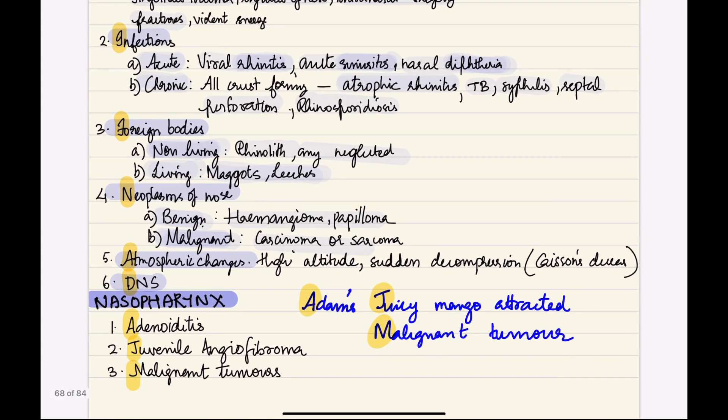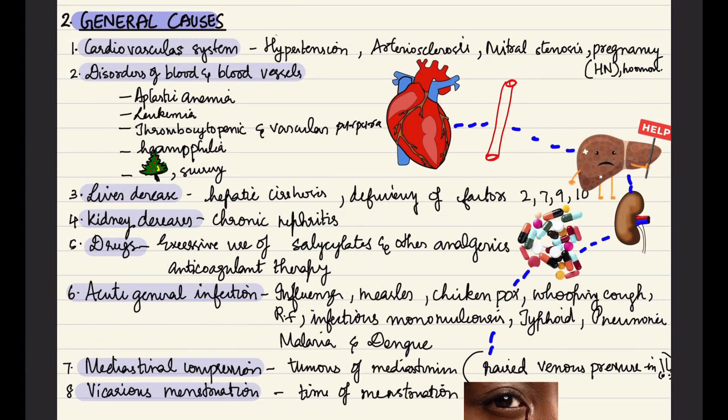For nasopharynx-related causes we can learn through a mnemonic: 'Adam's Juicy Mango Attracted Malignant Tumor'. A in Adam stands for adenoiditis, J stands for juvenile angiofibroma, and M for malignant tumor.